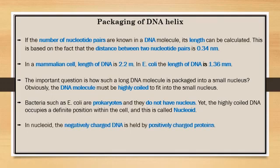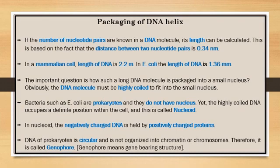The nucleoid is a specific position in the cell where the negatively charged DNA is held by positively charged proteins. DNA of prokaryotes is circular and is not organized into chromatin or chromosomes. In mammalian human cells, there are 23 pairs of chromosomes, and each chromosome is made of DNA plus protein — chromatin.